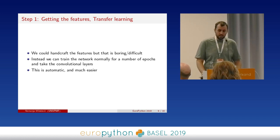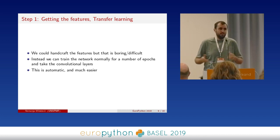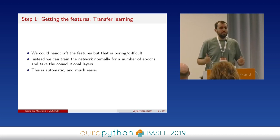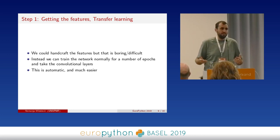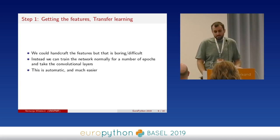Let's go through the steps. The first step to get the features: we can handcraft them, but that's difficult and boring, because when you change the dataset you have to do it all over again. What my algorithm does is simply train the network normally for a number of epochs — let's say 10 — and then just take the weights from the convolutional layers. Very simple. It's basically transfer learning: you take a snapshot from your model and apply it to a new modified model. It's automatic, so you don't have to do the boring stuff, and it's much faster and easier.